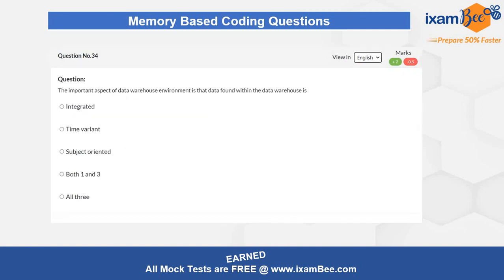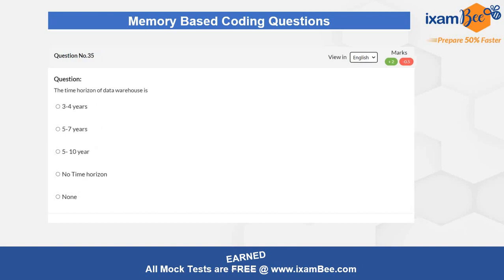Question four asks about an important aspect of the data warehouse environment — specifically, what kind of property the data warehouse holds when it contains data. Question five is related to the time horizon of the data warehouse, asking how many years the horizon can span, since a data warehouse is used to store historical data and you need to explain how long it can hold that historical data.